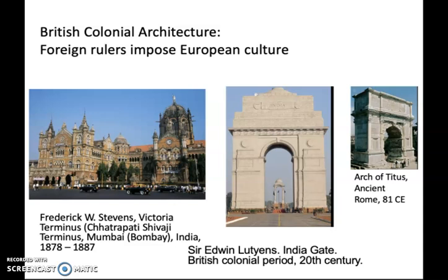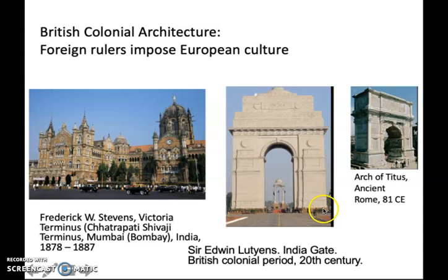This process of colonization involved the imposition of European culture. Both of these architectural monuments are statements of victorious British power in India. Especially, India Gate is a form known in European culture as a triumphal arch going back to the ancient Roman Empire — an arch through which a military would parade to celebrate Roman victory.